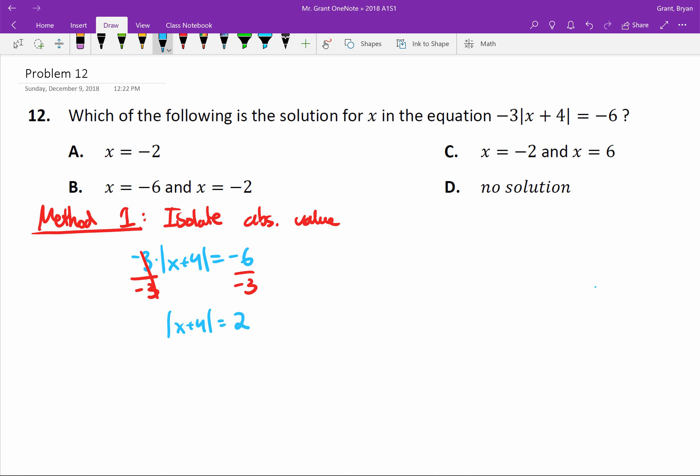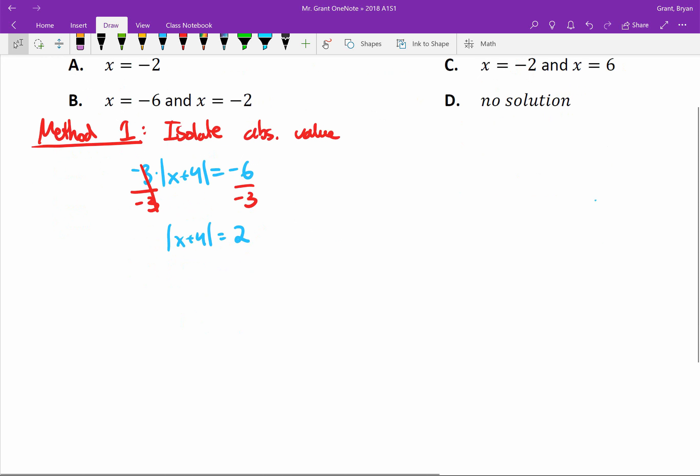Now that's good so far because whenever you take the absolute value of a number it should be positive, and it is positive right there. So after we've isolated the absolute value, now we come out to two equations. We should know that if the inside of this becomes positive two and then we do the absolute value of positive two, we get the right answer.